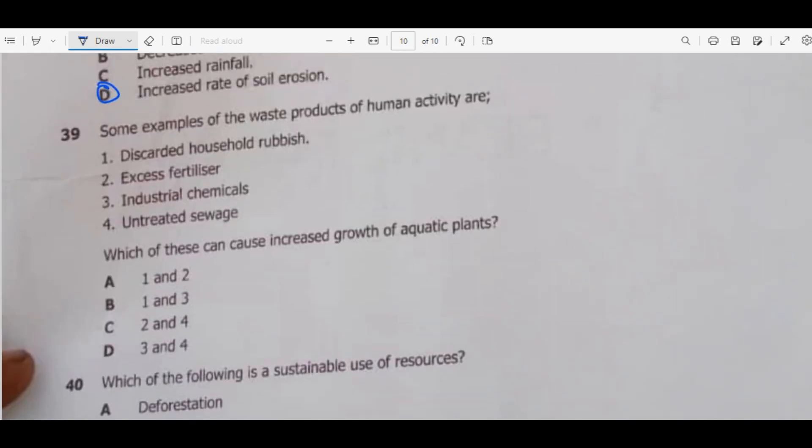Question 39. Some examples of the waste products of human activities are listed. Which of these can cause increased growth of aquatic plants? So fertilizer can increase aquatic plants and treated sewage. So it's 2 and 4.